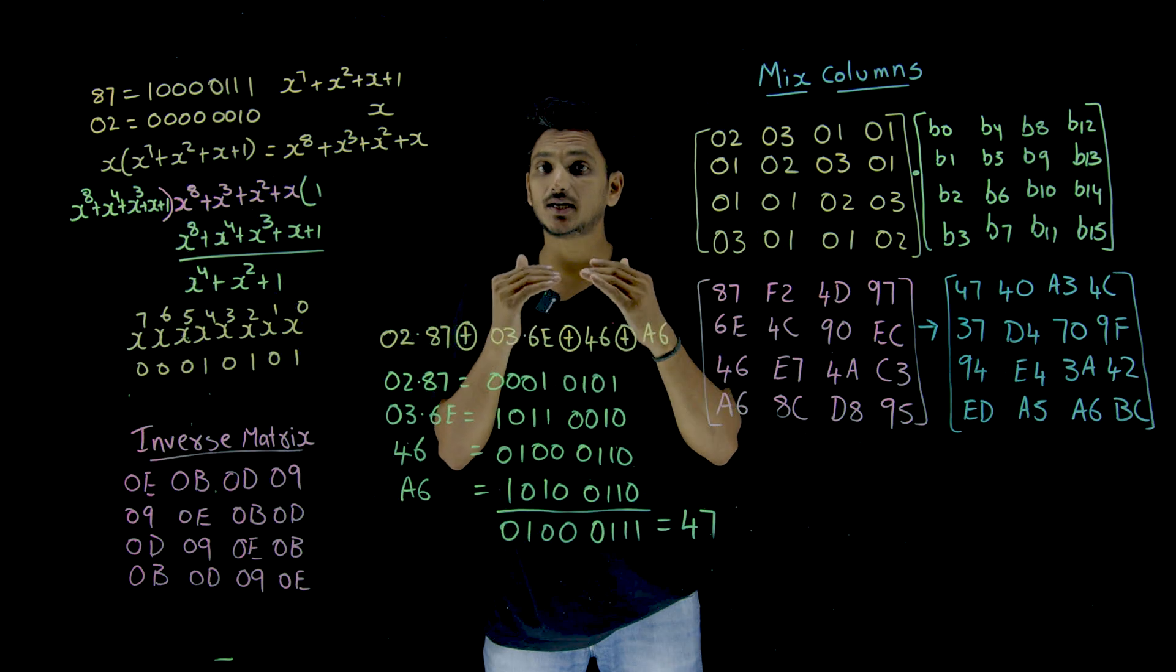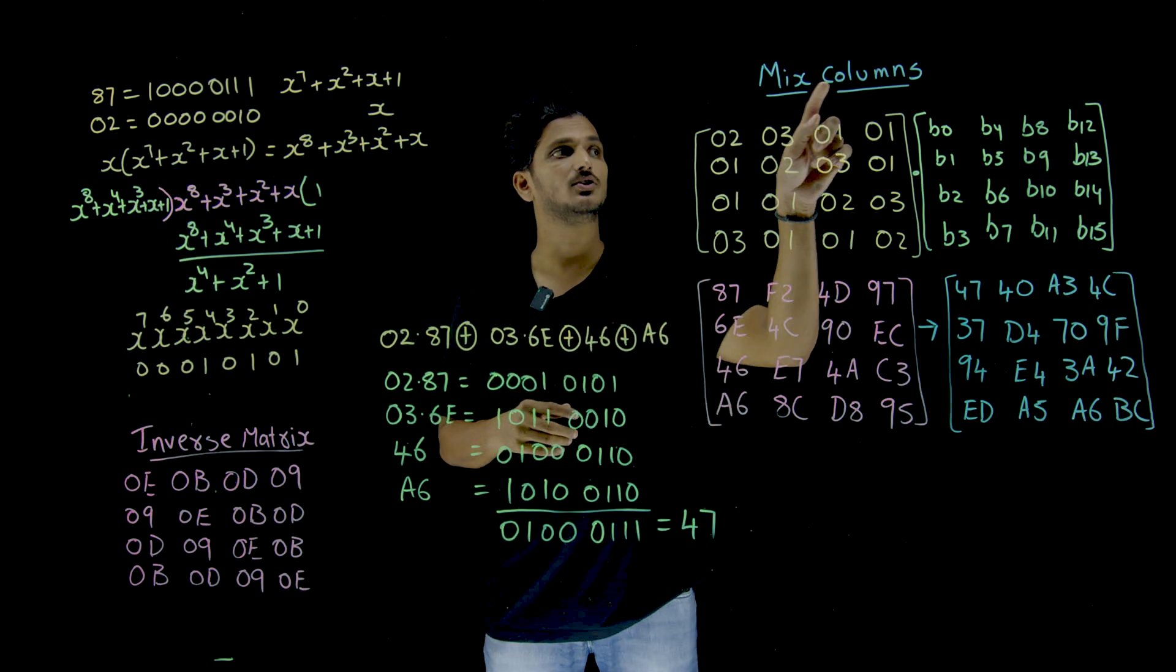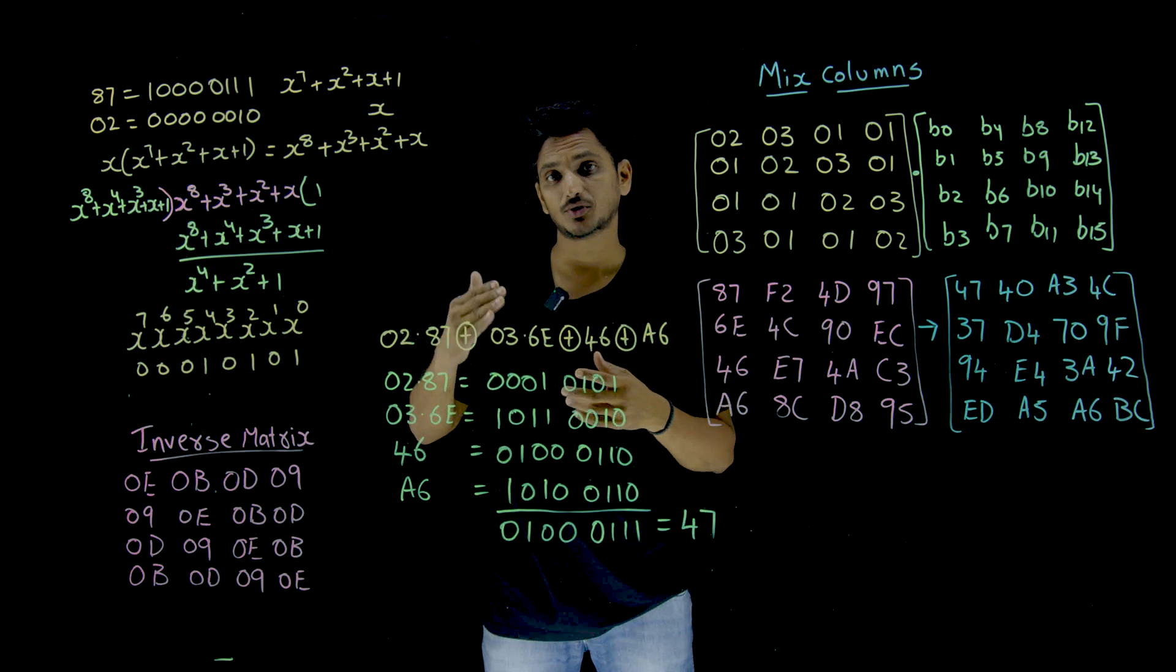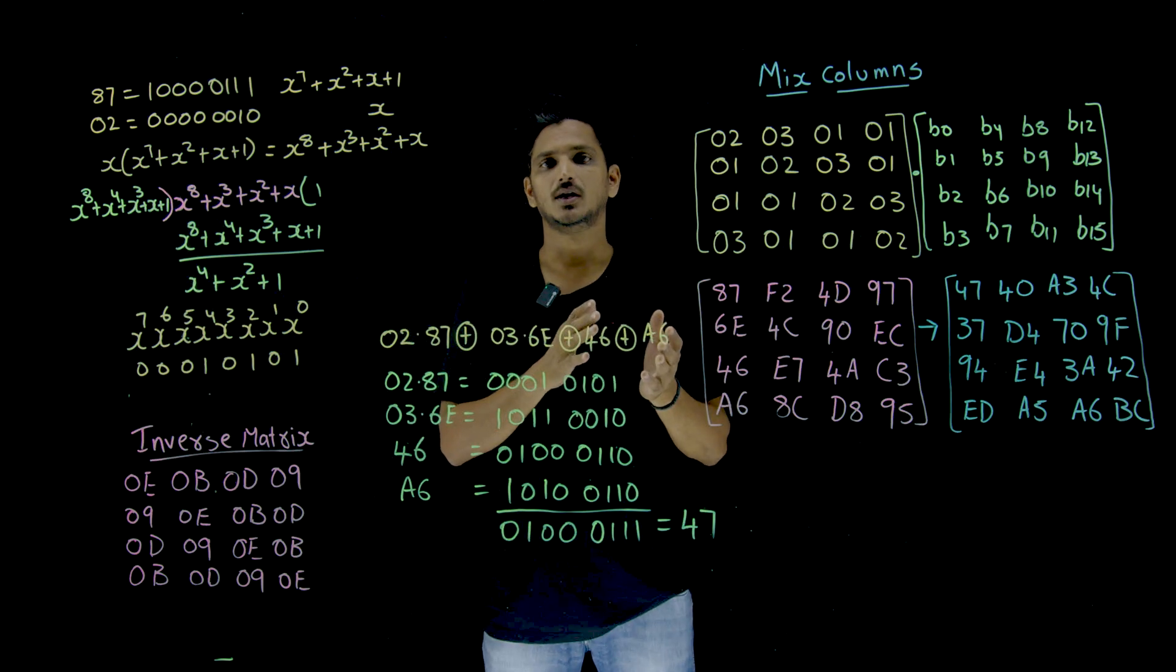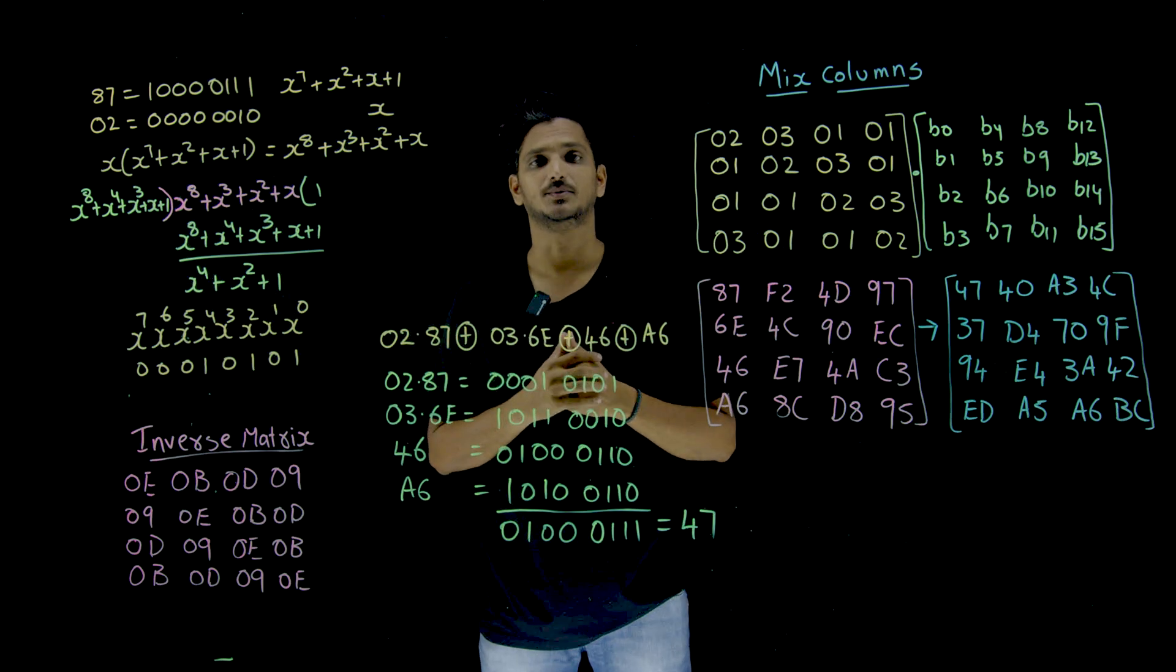In this class we will discuss about the third stage in AES each round, that is Mixed Columns. In our last class we discussed about Substitution Byte and Shift Rows. So please watch our previous classes and come back here. The link for the playlist is provided in the description below.